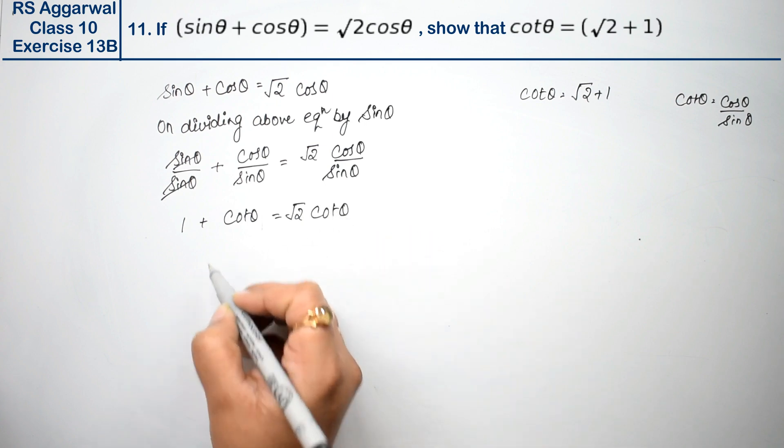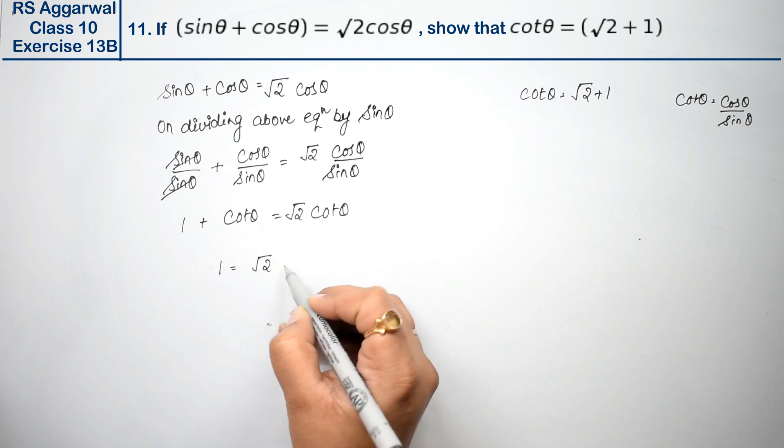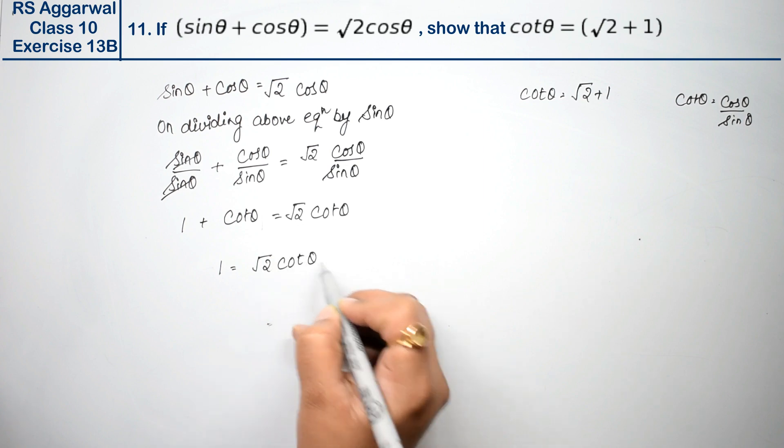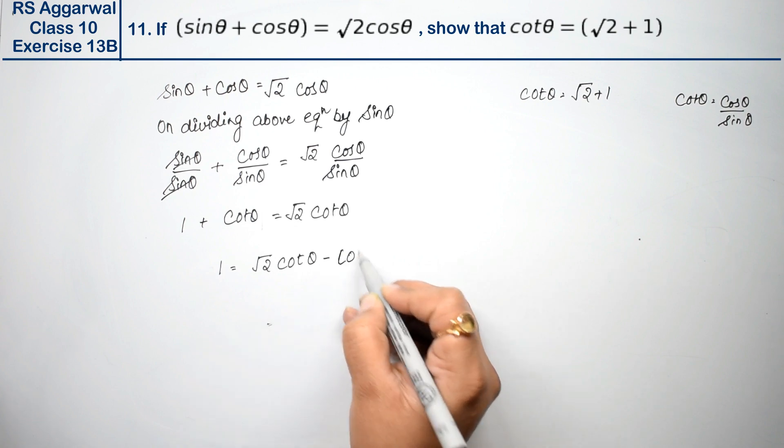Now cot theta equals root 2 cot theta minus 1, minus cot theta, sorry.